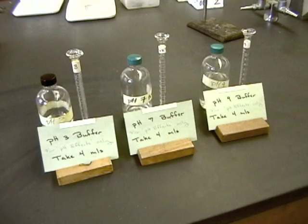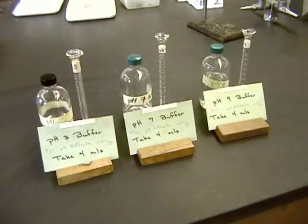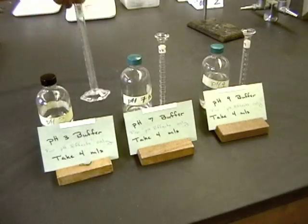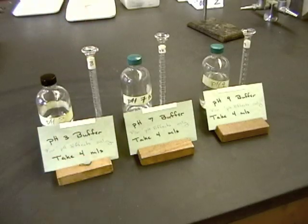The reagents for the pH experiment are stored on the other side of the lab, but it's the same sort of thing. For each of the different pH buffers, there's a dedicated graduated cylinder and a little sign telling you exactly how much you're going to need to complete your experiment.